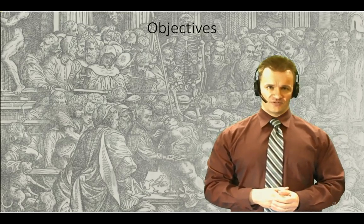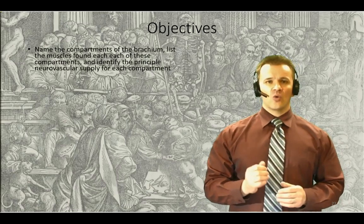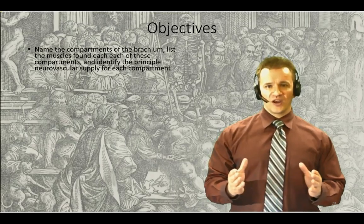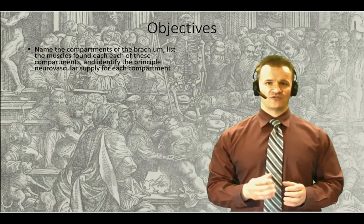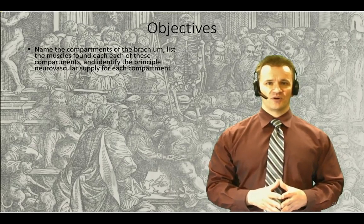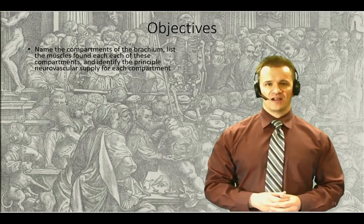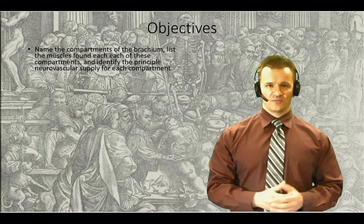Welcome back. In today's first session, we considered the elbow joint, which allows flexion and extension between the arm and the forearm. We now consider the muscles that generate this flexion and extension by looking at the brachium or upper arm region. There's a laundry list of objectives for this session. First, we're going to compartmentalize — organize the muscles and neurovascular structures into anterior and posterior compartments and identify commonalities between components of a given compartment.